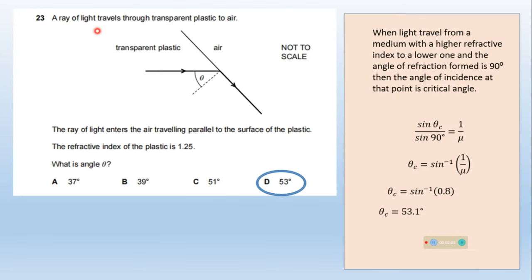A ray of light travels through transparent plastic to air. The ray enters the air traveling parallel to the surface of the plastic. The refractive index of the plastic is 1.25. What is the angle theta? When light travels from a medium with a higher refractive index to a lower one, the angle of refraction is 90 degrees, so the angle of incidence at that point is called critical angle.